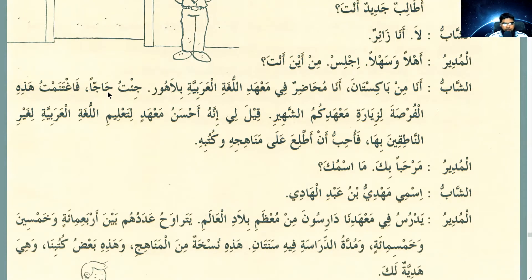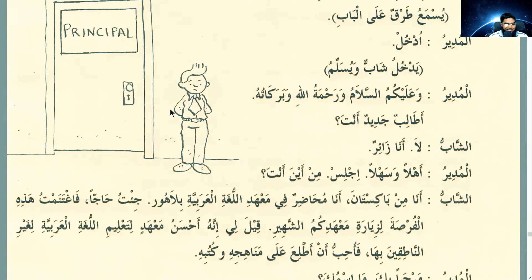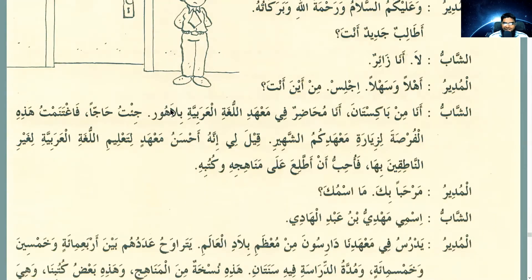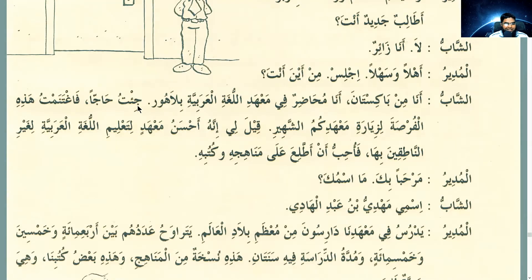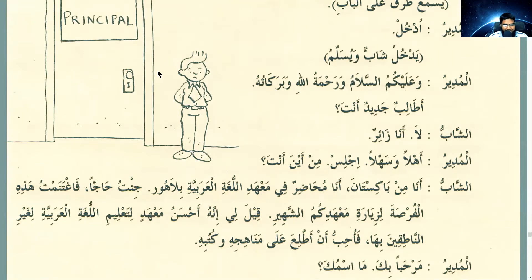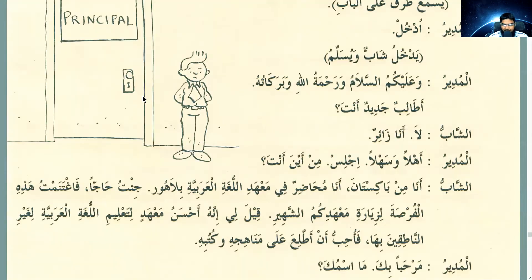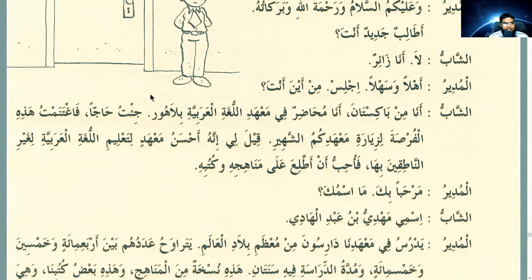He looks very young — the artist drew him like a child because the text described him as shab, a young man. He's actually a lecturer in the mahad — the institute — in Lahore. The artist should be fired, but alhamdulillah we have something at least — better than the black and white ones.